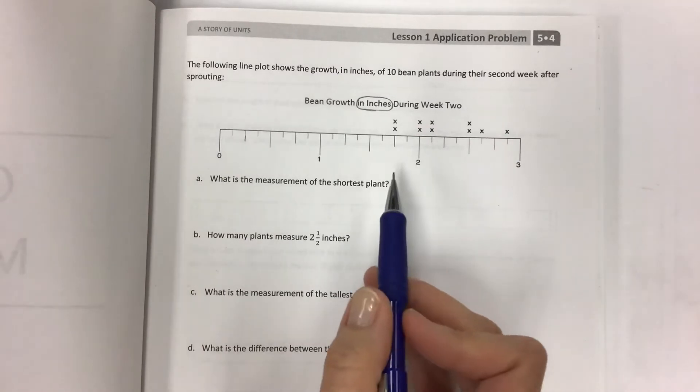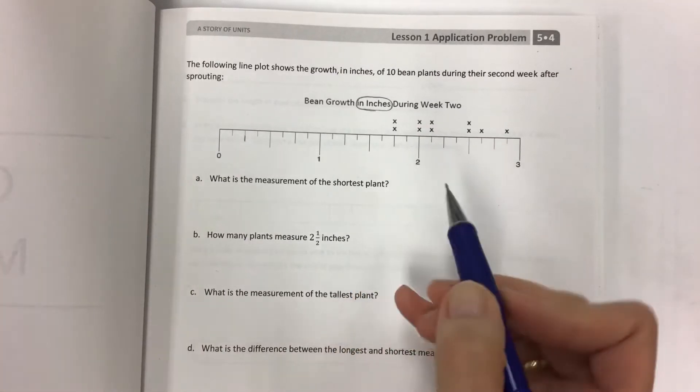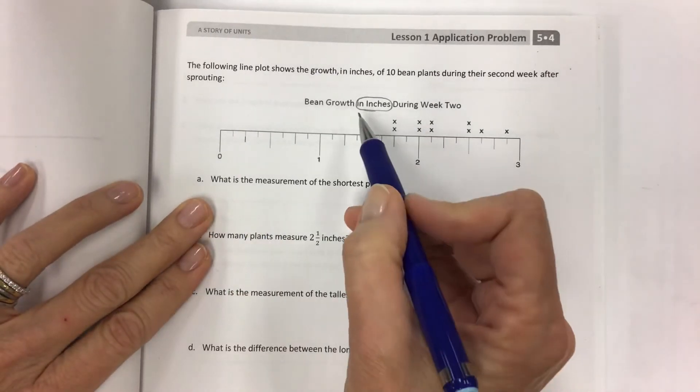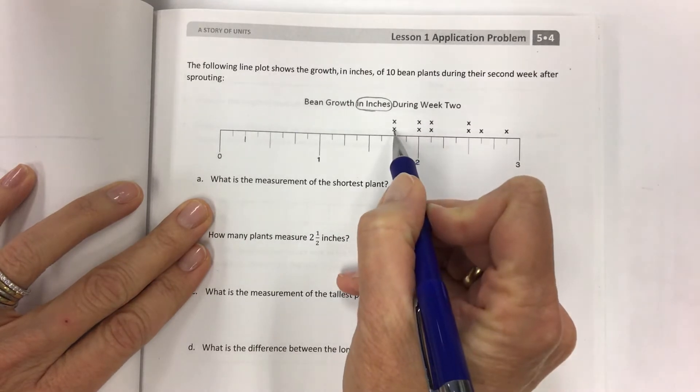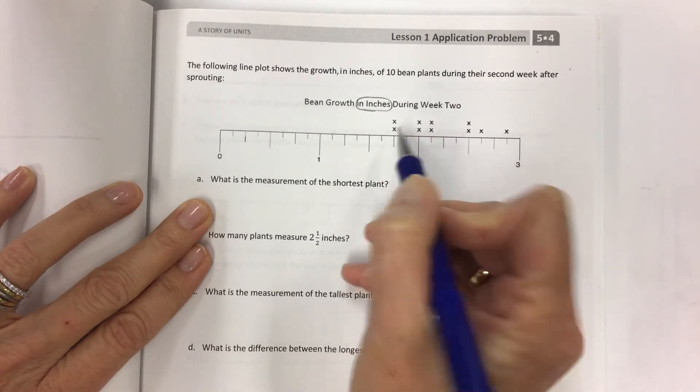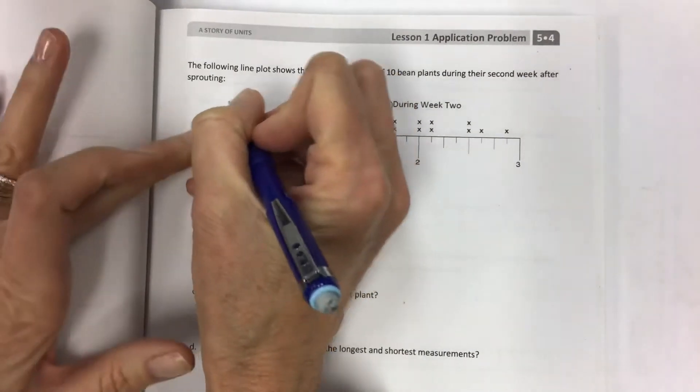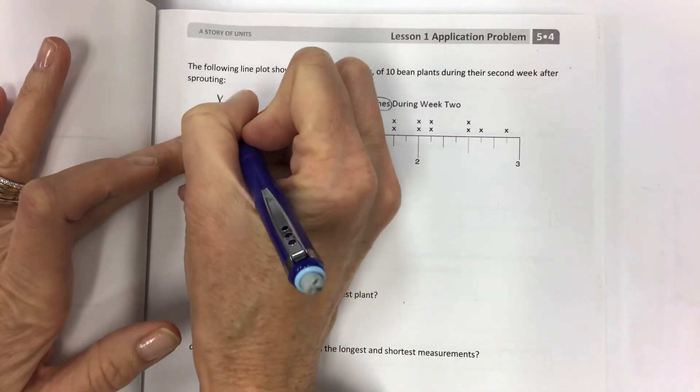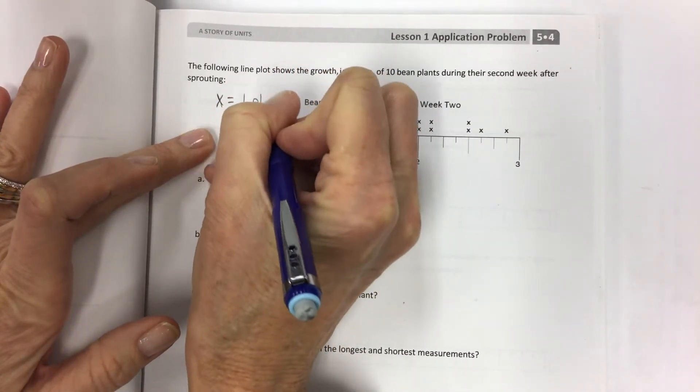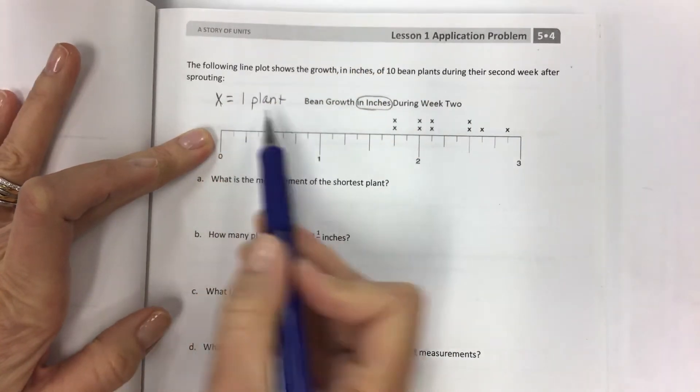Some people say data, data, data, it doesn't matter. So each of these X's represents one plant. So I said in the notes, one X equals one plant. So this is what we're counting today.